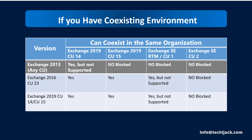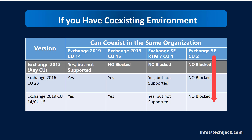If you have Exchange 2019 CU14 or CU15, you can coexist with those versions since they are essentially the same version. If you install Exchange SE RTM or CU1, coexistence is technically possible but not supported. Once you install Exchange SE CU2, you can no longer coexist with Exchange 2019 — it will be blocked. After Exchange SE CU2, no prior Exchange version can coexist in your environment; only future updates like CU3 or later will be supported.